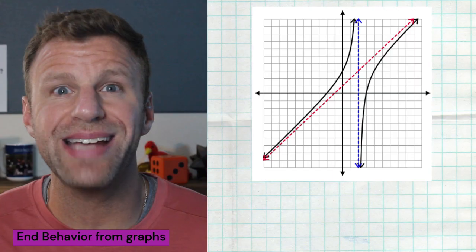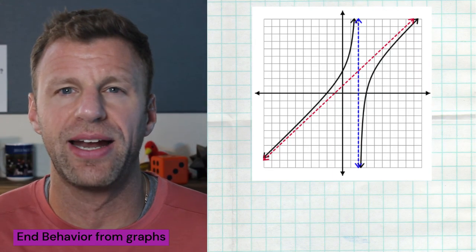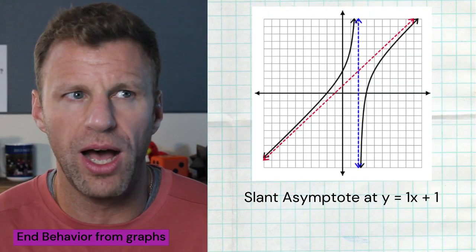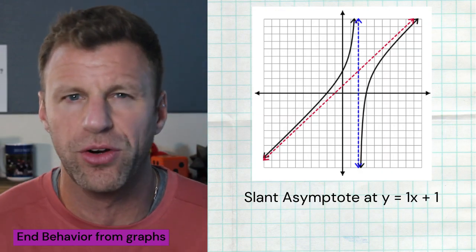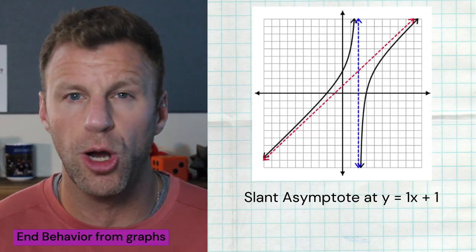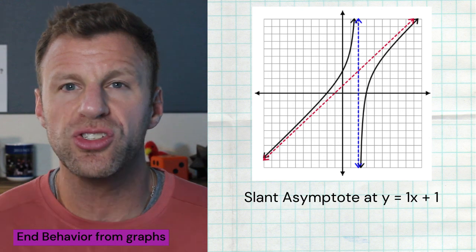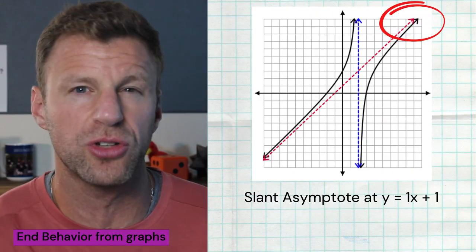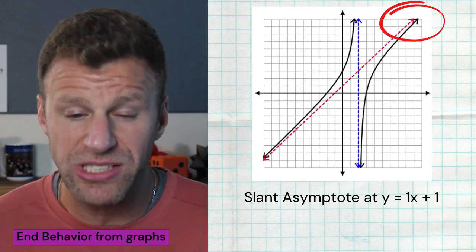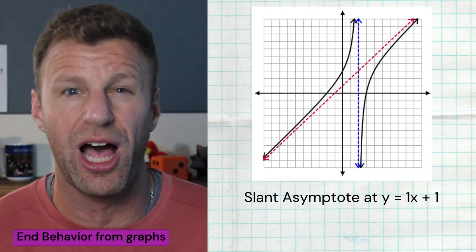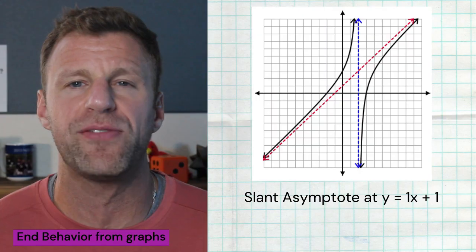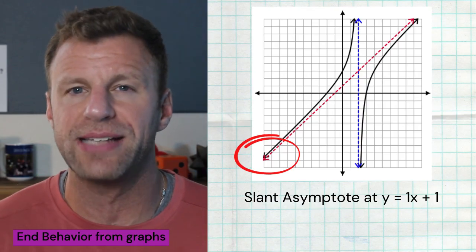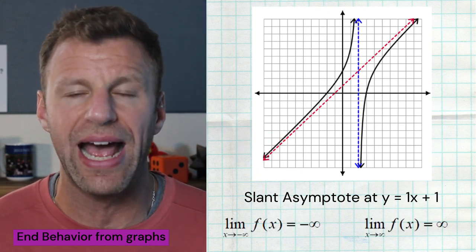Here is a second graph where we notice a slant asymptote — maybe you've never seen one before. We see both a vertical and a slant asymptote. The end behavior of the rational function follows the end behavior of the polynomial. Looking at the right end: the asymptote is going up forever, so the function getting closer to it is also going up forever — the limit as x goes towards positive infinity is positive infinity. And looking at the left end: the asymptote to the left is going down forever, so the function going towards negative infinity is also going down — the limit as x goes towards negative infinity is negative infinity.